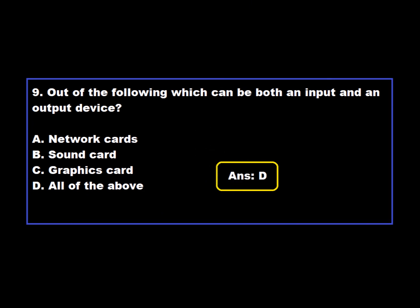Question 9: Out of the following, which can be both an input and an output device? Option A: Network card. Option B: Sound card. Option C: Graphics card. Option D: All of the above. Option D is correct — all of the above can be both output and input devices.